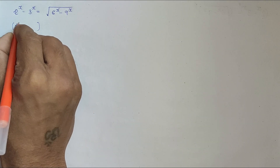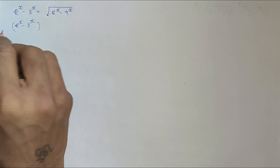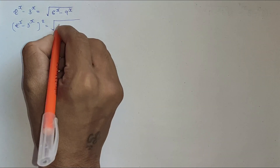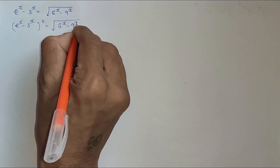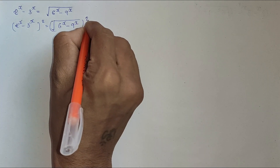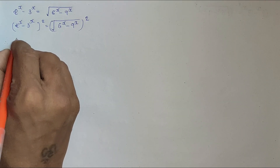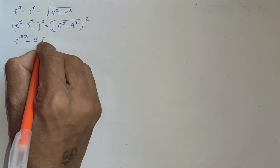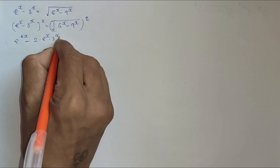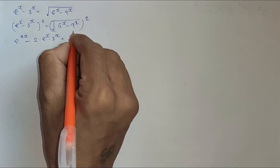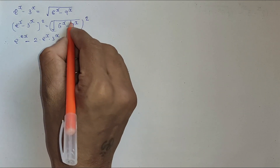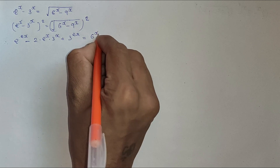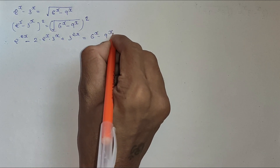We get (2 to the x minus 3 to the x) whole square equals square root of (6 to the x minus 9 to the x) whole square. So the square cancels on the right, giving us 2 to the 2x minus 2 times 2 to the x times 3 to the x plus 3 to the 2x equals 6 to the x minus 9 to the x.